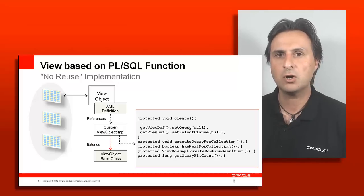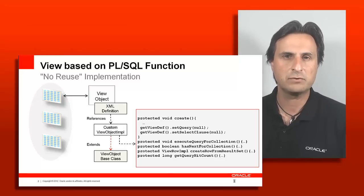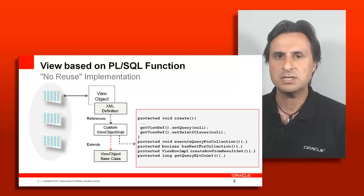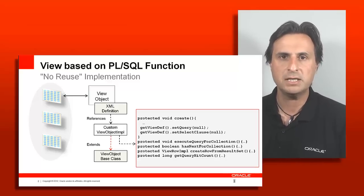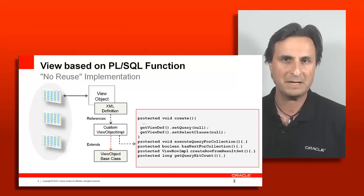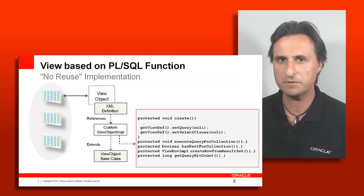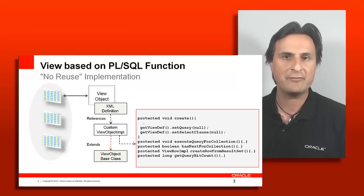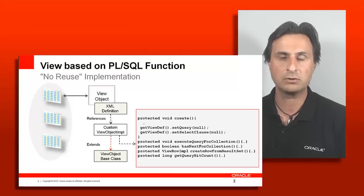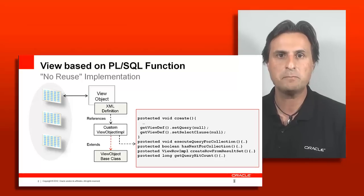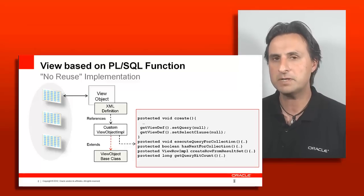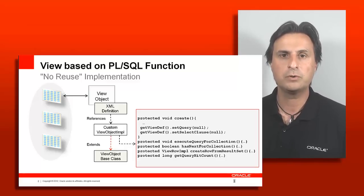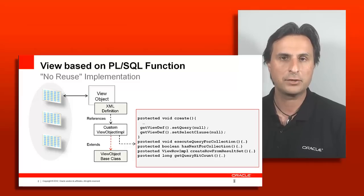With the custom implementation class open, you go to the source menu option and override methods. On this screenshot you see some of the methods that you need to override. You override the query for collection, which gives you a way to intercept the query request from the view. Then you have a method to check has-next for collection, which allows you to enable or disable navigation buttons. You also have create-row-set-from-result-set or create-row-from-result-set, which is the most important part — it takes data fetched from the database and puts it into a row that can then be displayed on screen through a view object.